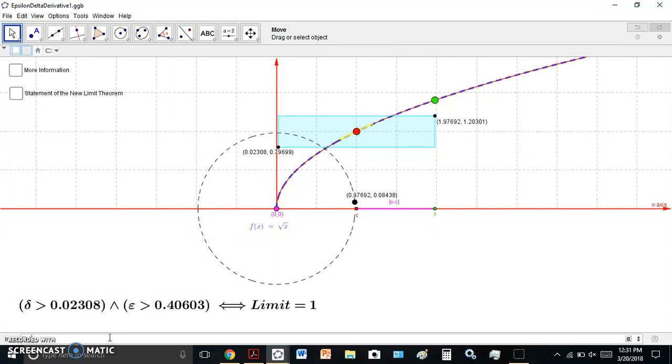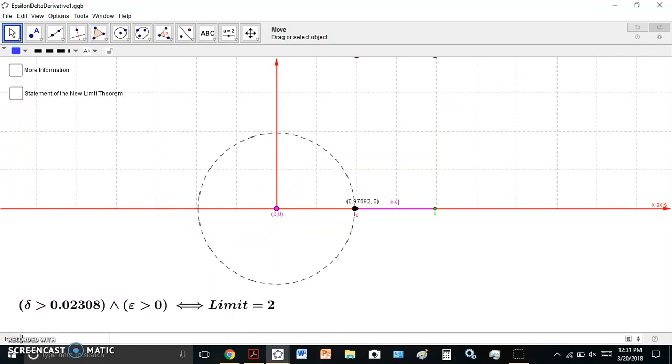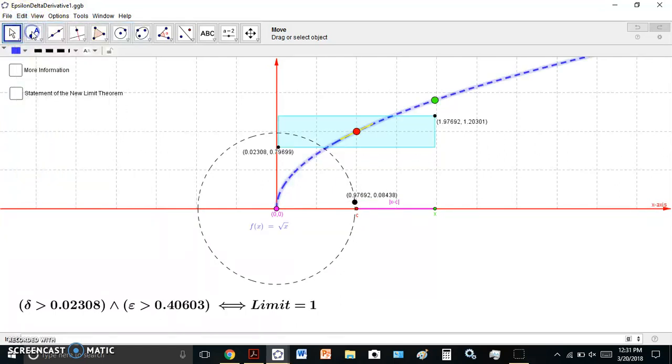oops, f of x is equal to, let's say, 2. Oh, I don't know what I did there. Let me just undo that. f of x is equal to 1.